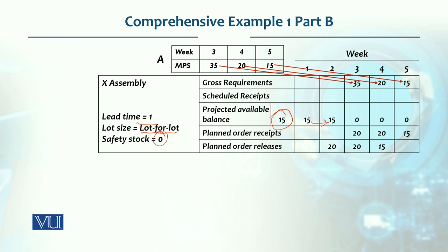If we receive the order, it means production must be released one week before. So for the 20 units ordered, we receive 20 units plus the existing 15 units, making 35 units total which we consume. The ending inventory is 0 units.